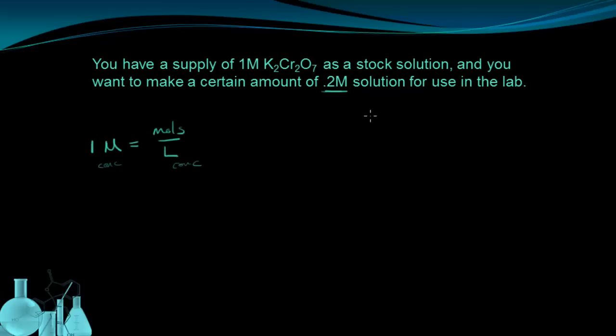We can also look at the diluted one we want to make. The diluted one we want is 0.2 molar. That's going to equal the moles of potassium dichromate over the liters, the amount of volume of our diluted solution. Now, we're just diluting the solution, so the moles in both cases are equal. This is constant between the two solutions.